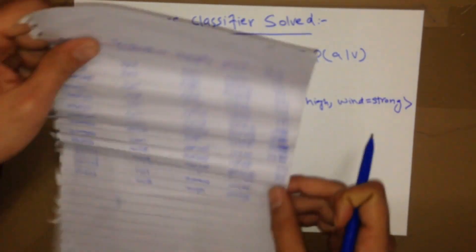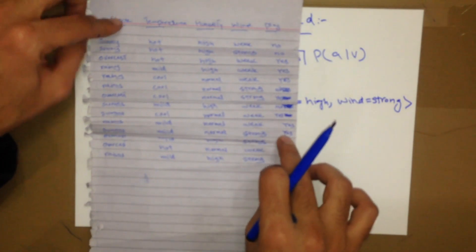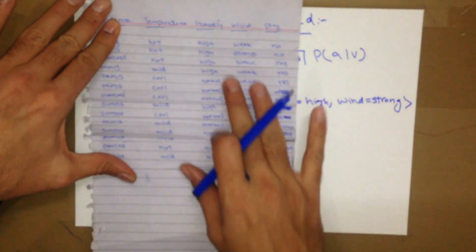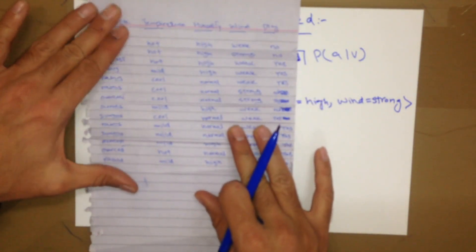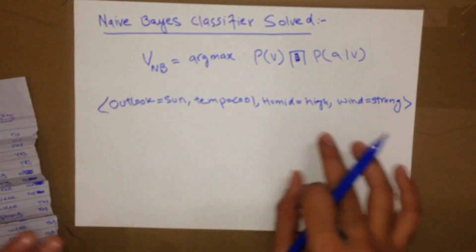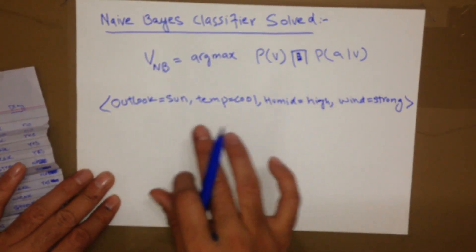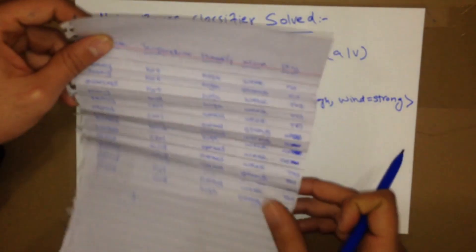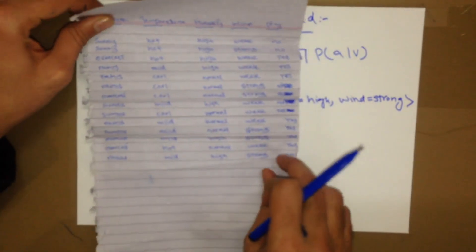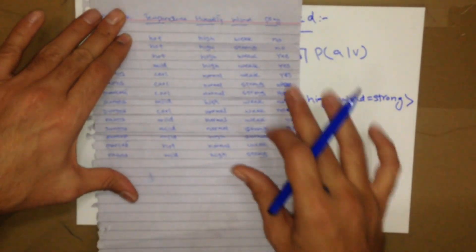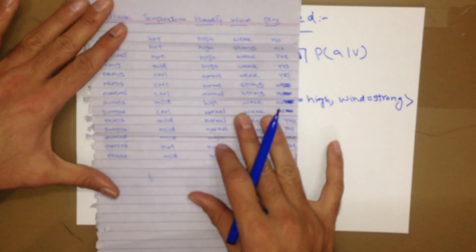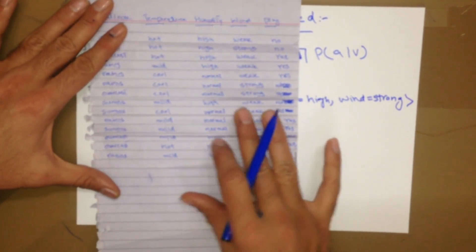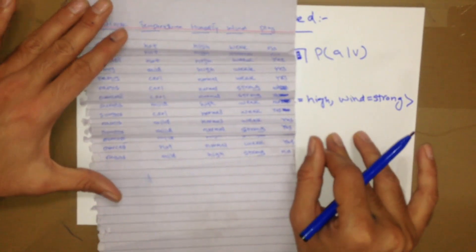This is the instance given to us. We have the whole table of all instances, and we are asked to predict what is the target label for this instance. This is the training dataset we will use to train our classifier.